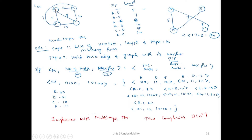Consider a graph with nodes A, B, C, D containing 6 edges. Arranging the edges in ascending order, the edge weights are: 5, 7, 8, 10, 15, 20, with corresponding paths A to D, B to D, A to C, A to B, C to D, and B to C.